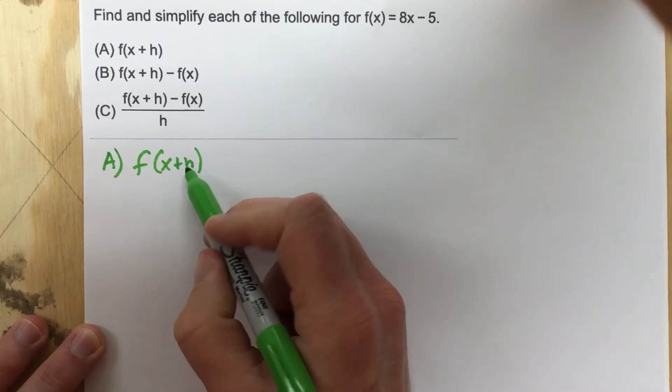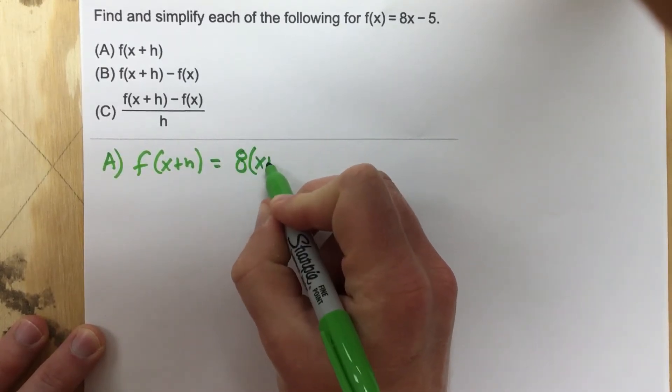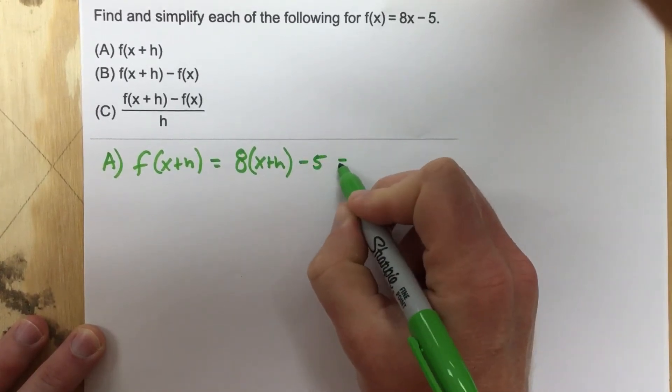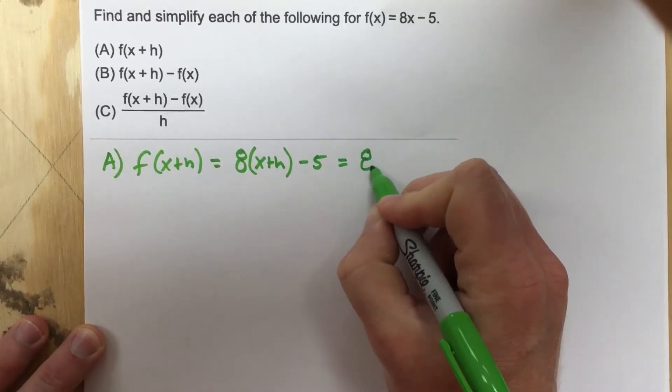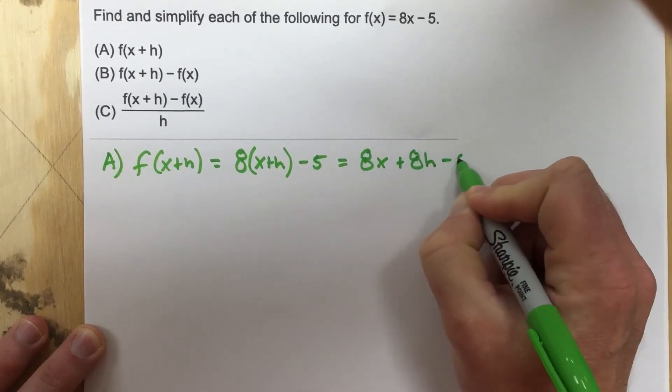replace it with the x value. So f(x + h) is going to equal 8(x + h) minus 5, which if we distribute that, that's going to be 8x plus 8h minus 5.